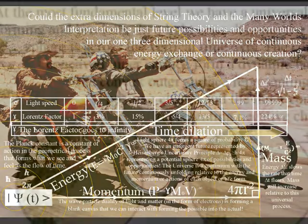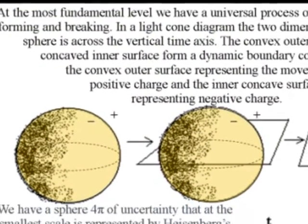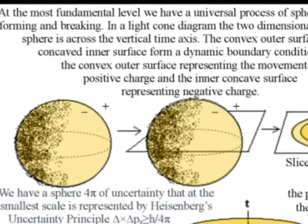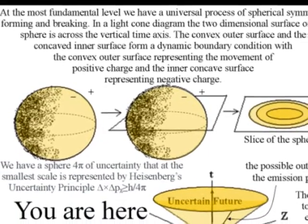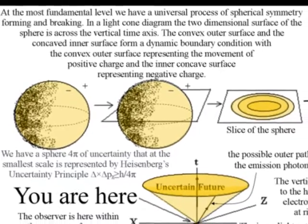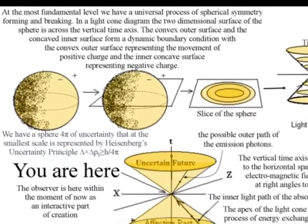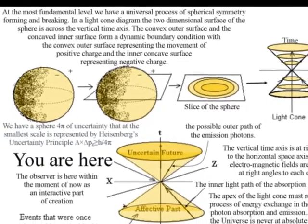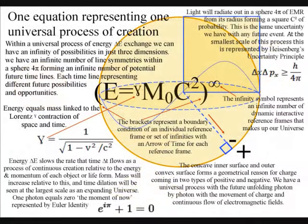In my other videos I explain that at the most fundamental level this is a process of symmetry forming and breaking that forms greater degrees of freedom for entropy or disorganization and also greater degrees of freedom for the diversity and complexity of life with the whole theory being explained by just one equation representing the dynamic geometry of this process.